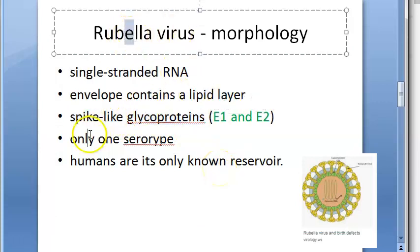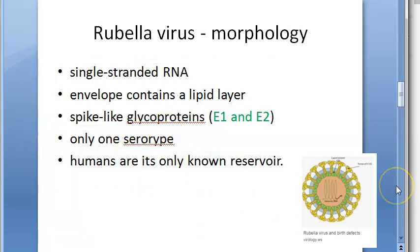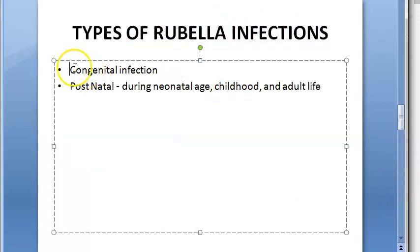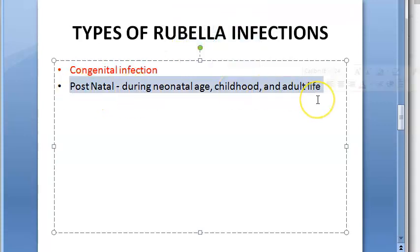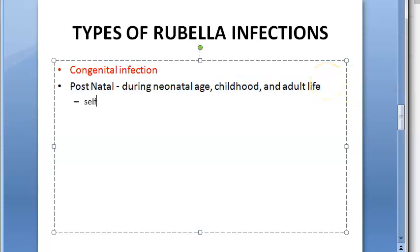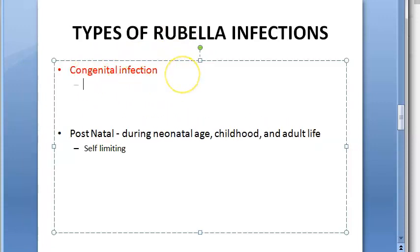Rubella has only one serotype and humans are the only reservoir. It causes both congenital and postnatal infection. Postnatal infection — acquired after birth by a neonate, child, or adult — is a self-limiting condition and not very life-threatening.